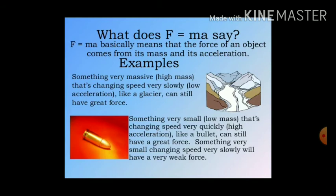Some examples: something very massive — high mass — that changes speed very slowly has low acceleration, but can still have a great force. Like a large heavy object: its movement may be very minor, but it can produce a very heavy force. In contrast, if an object has very small mass and moves with a lot of velocity, it may not produce as great a force.